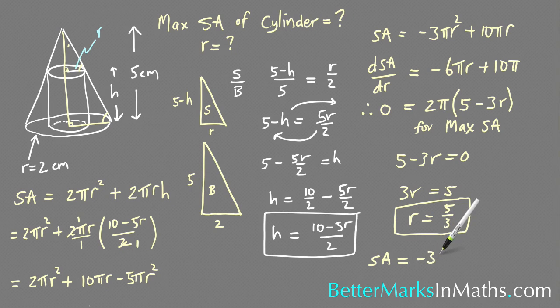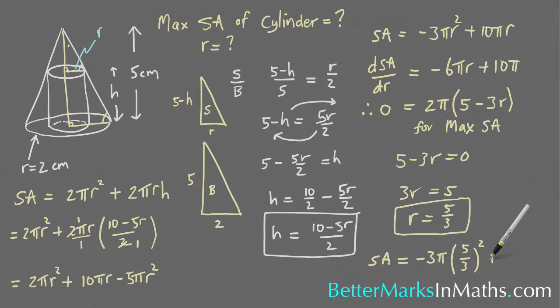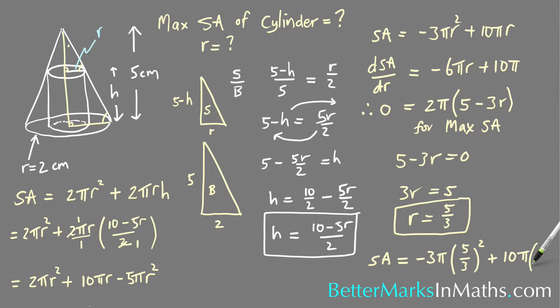SA is equal to -3πr², so (5/3)², plus 10π times by 5/3.